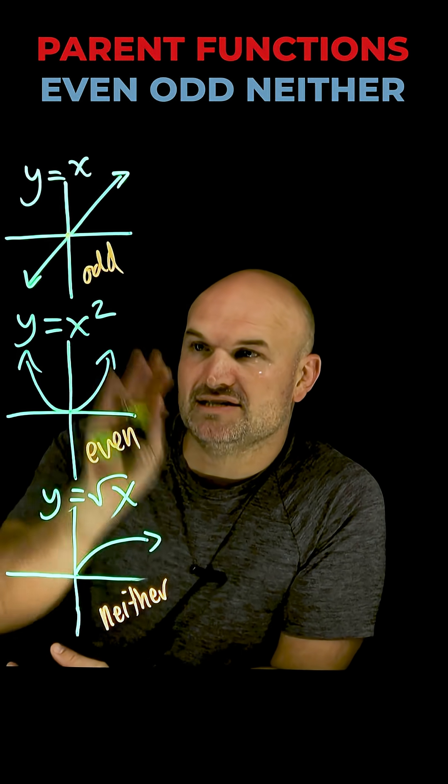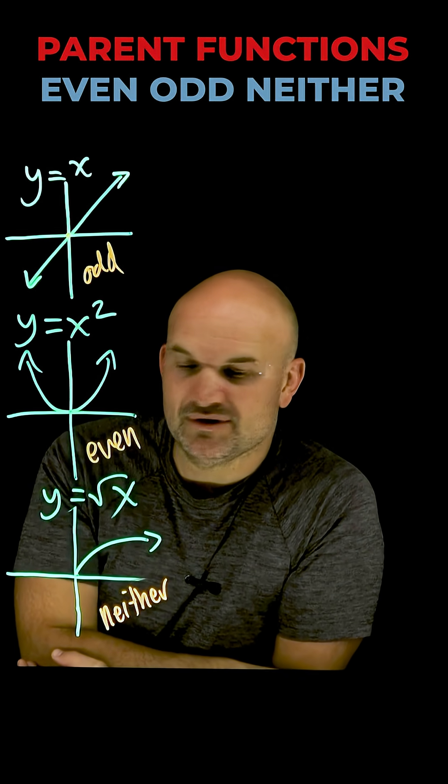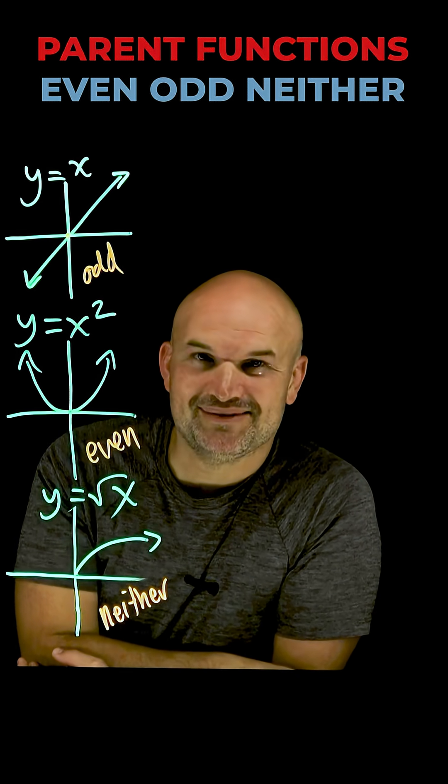Even functions are symmetrical about the y-axis. Flip it across the y-axis and you get the exact same graph. Neither functions do not have any symmetry, so that's why we call them neither.